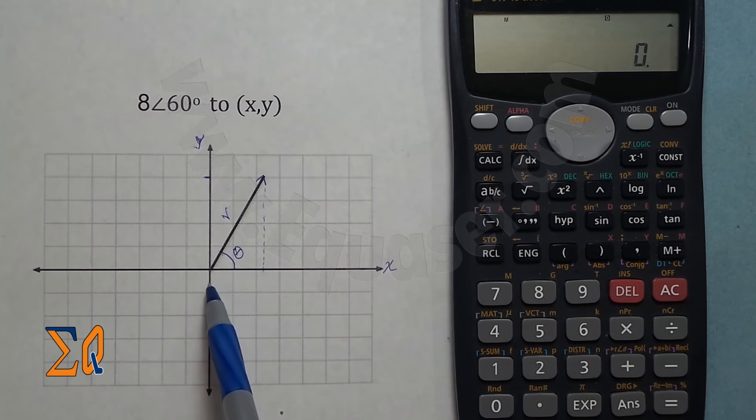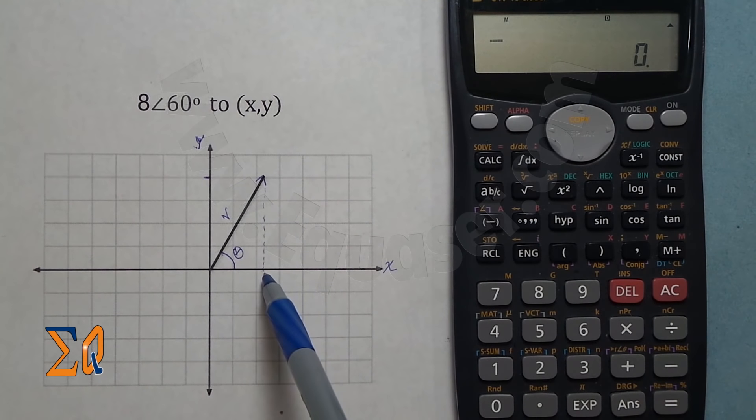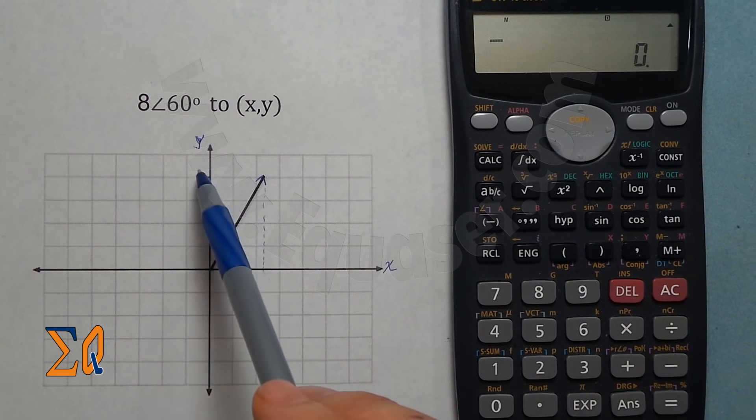The tip of this line R, if we come down there is a point on the X axis and there is a point on the Y axis. We want to find the coordinate in X and Y which is called Cartesian or rectangular because it creates a rectangle.